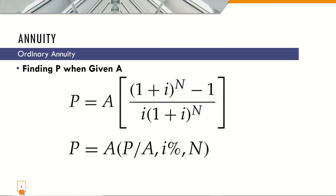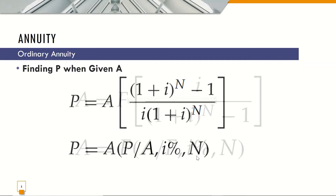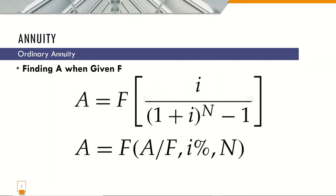Finding P when A is given: P is equal to A times the quantity of (1 plus i) raised to n minus 1, all over i, times 1 plus i raised to n. This quantity can be specified by the symbol P given A at i percent and n interest periods. Finding A when F is given: A is equal to F times i all over (1 plus i) raised to n minus 1.